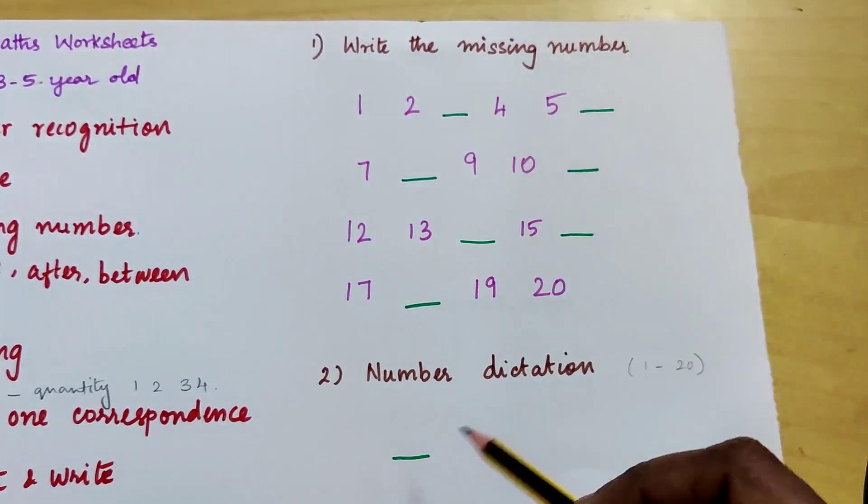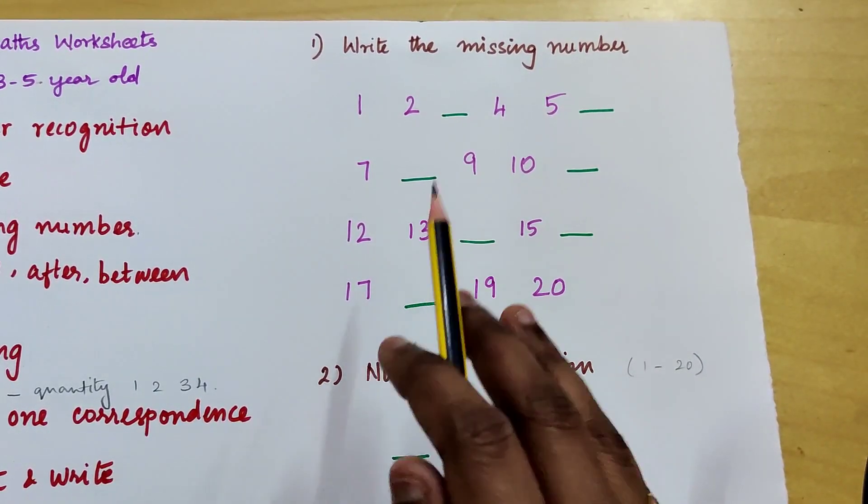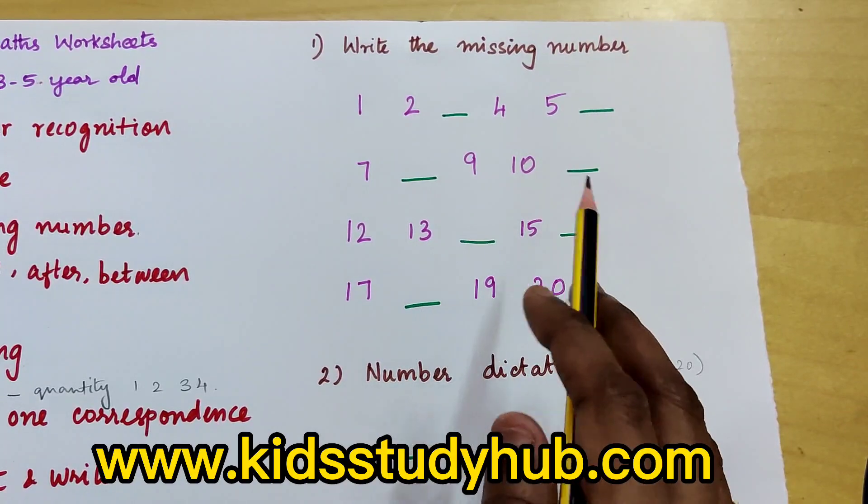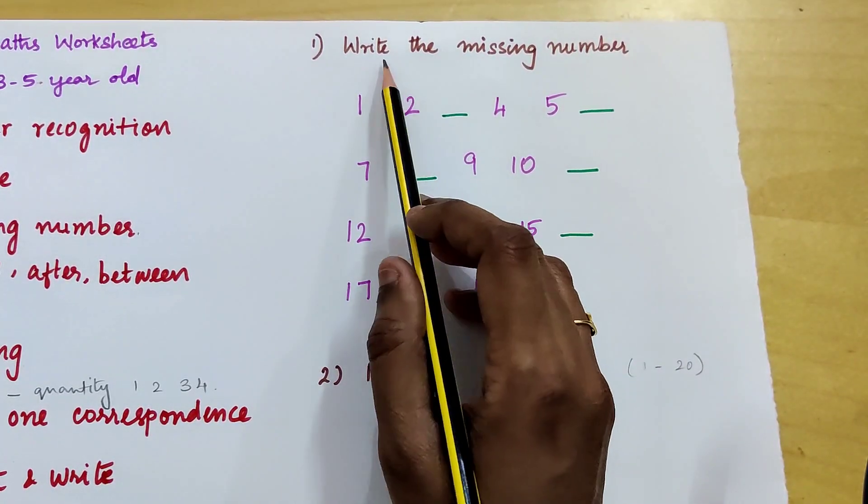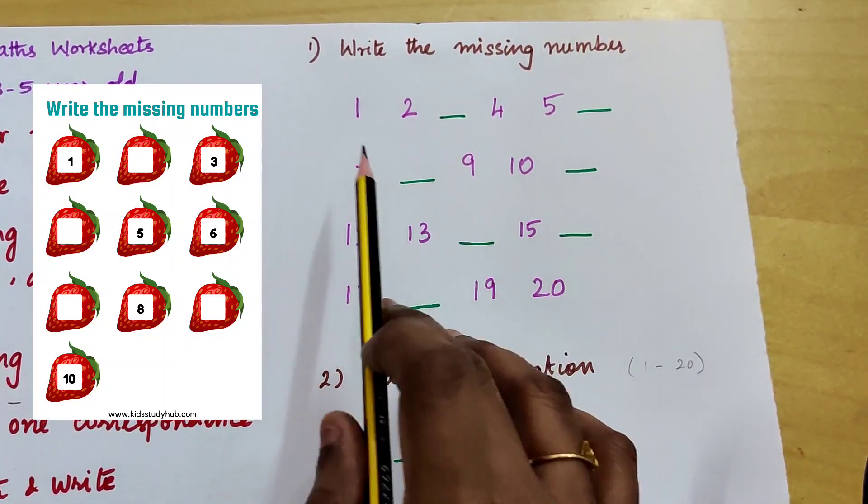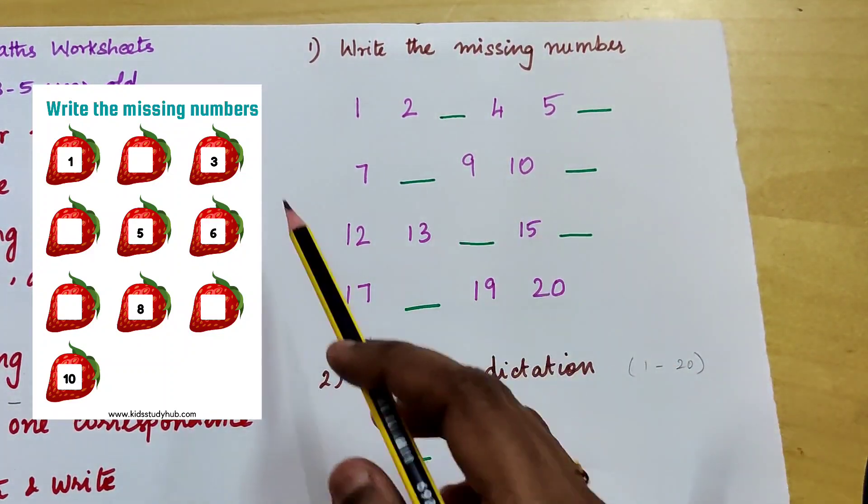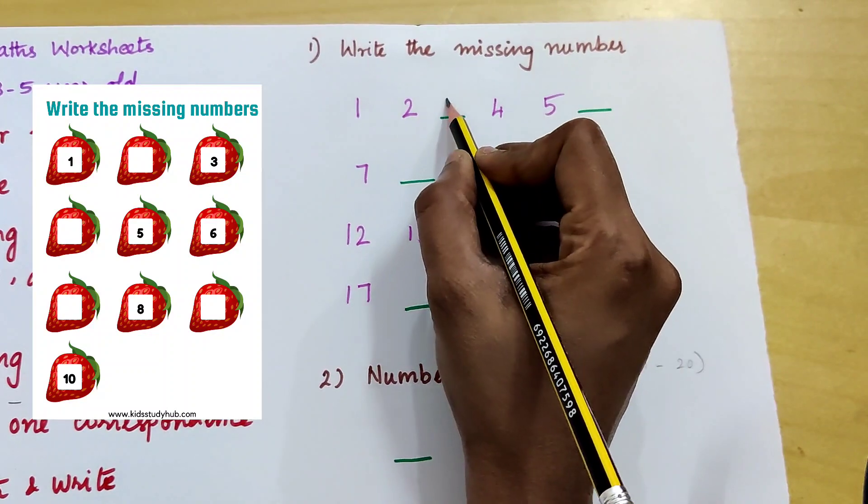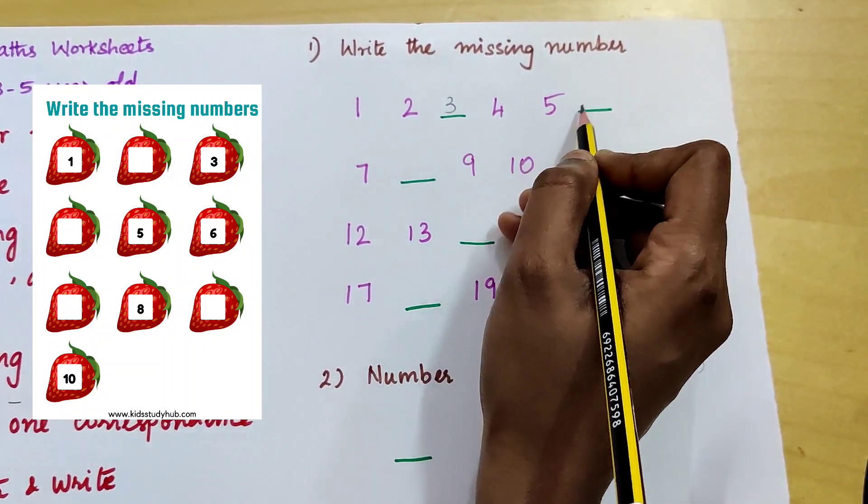So now let's see the worksheets. These worksheets are also in printable form in our website KidsStudyHub.com. So first question is write the missing number. We can give all the numbers in order with few blanks and then they have to fill the blanks with the correct number.